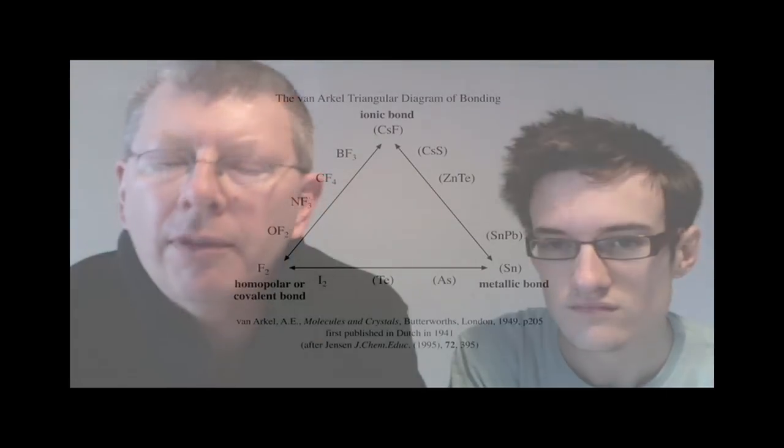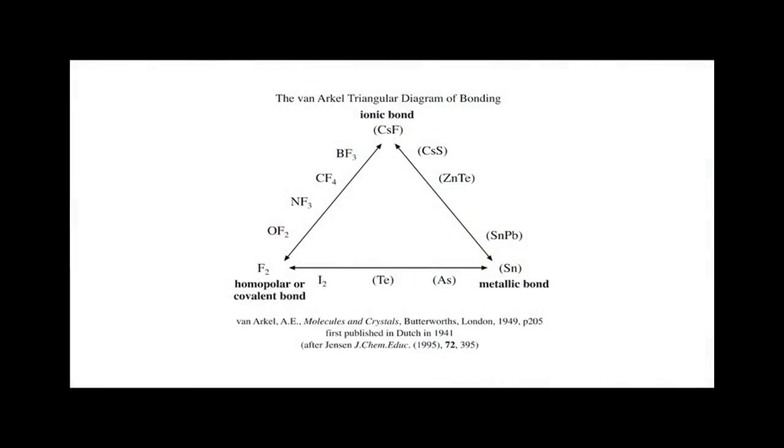In 1941, Van Arkel came up with a triangle of bonding in which he had the ionic bond with cesium fluoride, the homopolar covalent bond with fluorine or iodine, and the metallic bond with tin. And this is known as the Van Arkel Triangle of Bonding.